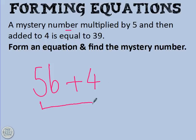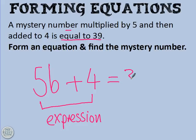So far that is just an expression. And we've been forming expressions before and you can watch a video on that, but this is all about making an equation so that we can work out what the mystery number is. The good news is we're told in the question that it's equal to 39. So 5B plus 4 is equal to 39 and now we have an equation.